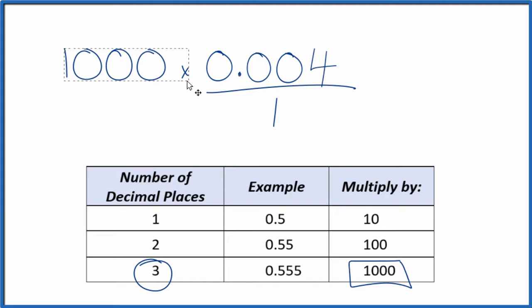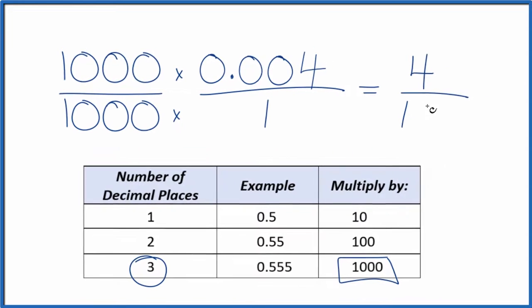So 1,000 times 0.004, that gives us just 4. But we can't only multiply the numerator by 1,000. We also have to multiply the denominator. That's because 1,000 over 1,000 is just 1. So we're multiplying by 1. We don't change the value, just the way it's represented. And 1,000 times 1 is 1,000.